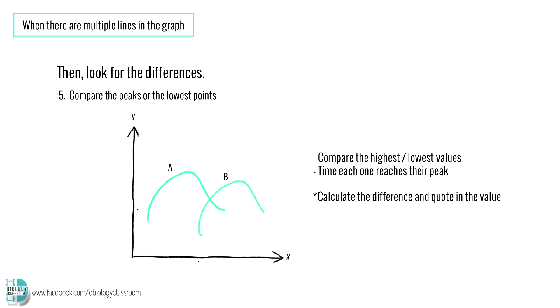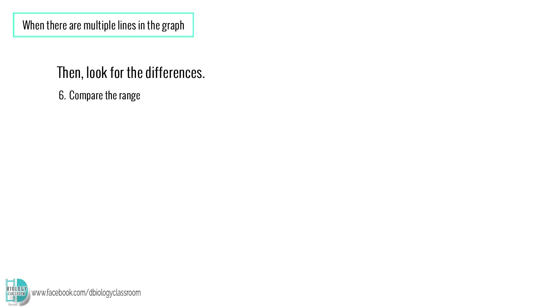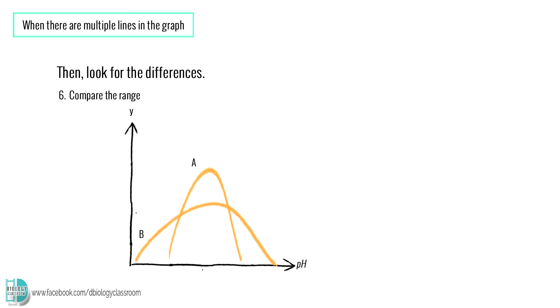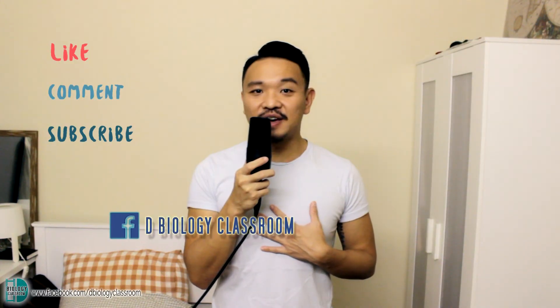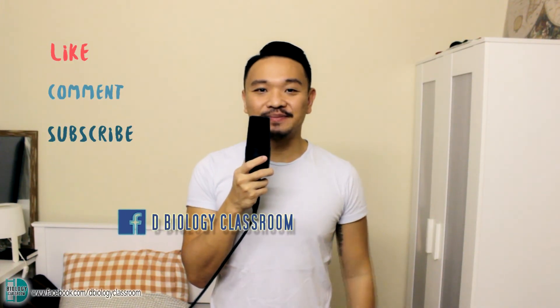Remember to calculate the difference between the two peaks and quote in the value. Number six, compare the range — sometimes the two lines show different range on one of the axes. In this example, enzyme B is active in a wider range of pH than enzyme A. If you enjoyed this video, don't forget to like, comment, and subscribe. You can also find me on Facebook. Thank you and see you again soon.